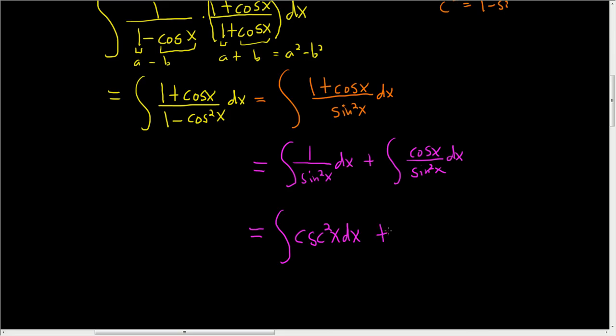And then over here, if we think about 1 over sine times cosine over sine, 1 over sine is cosecant, and then cosine over sine is cotangent.